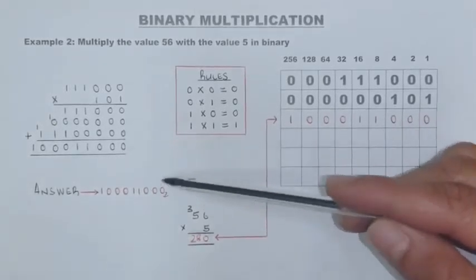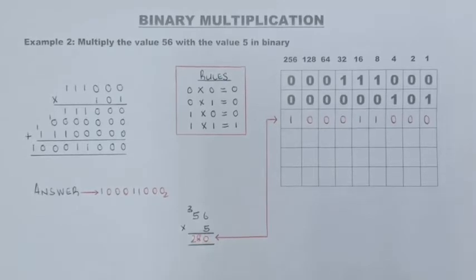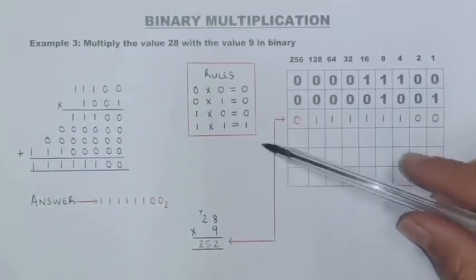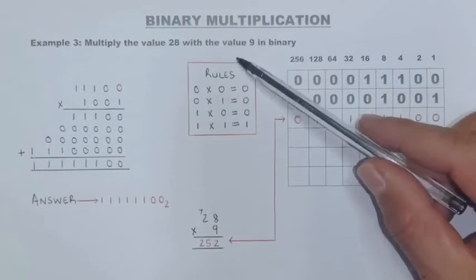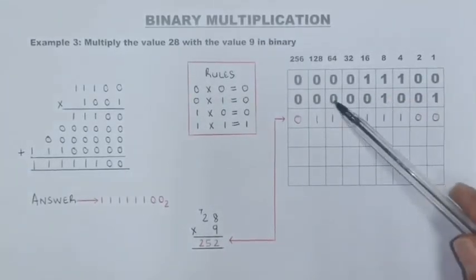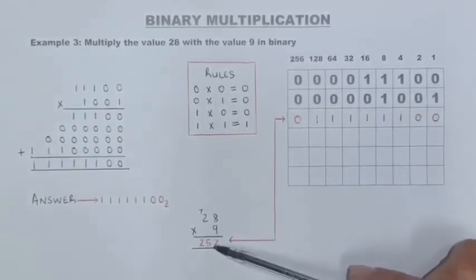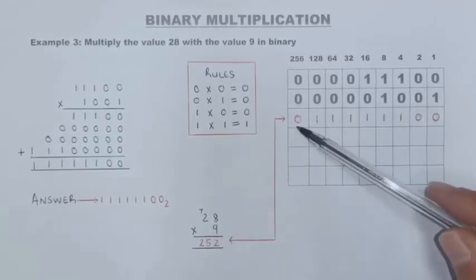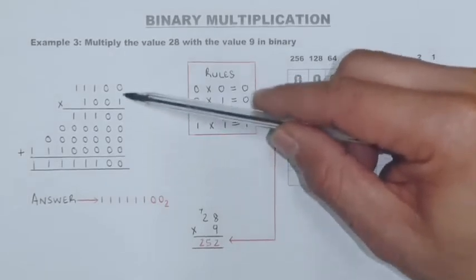Check your answer against the code system — if it matches, you've done the calculation correctly. Now let's go to the third and last example: 28 multiplied by 9. Note that the number 9 has four digits in its binary representation. Again, put both into the code system to find their binary values, multiply to get the decimal answer, then put that into the code system to find the binary value you need to obtain.